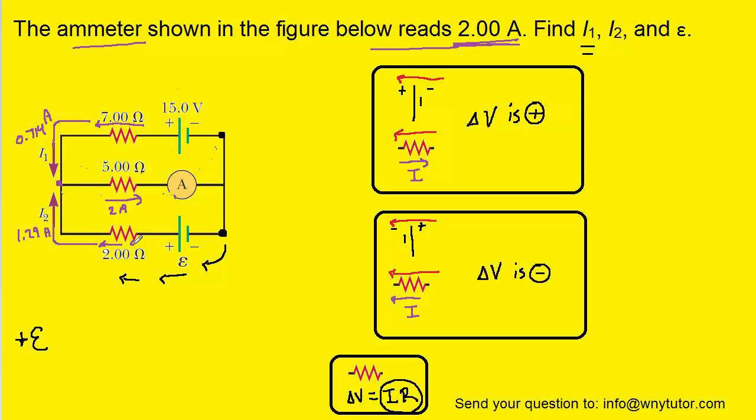particularly if we extend I2 back a little bit, that we are moving with the current. We are moving with I2. And when we move with the current, we will have a negative change in voltage equal to a current times a resistance. Now the current in this section was just determined as 1.29. The resistance is shown as 2.